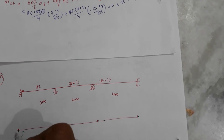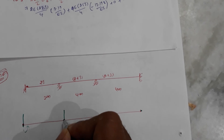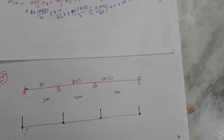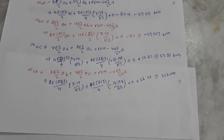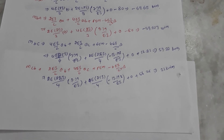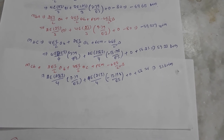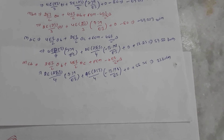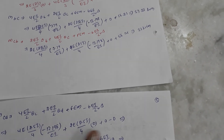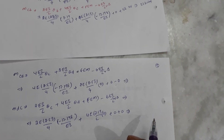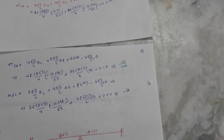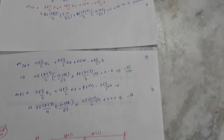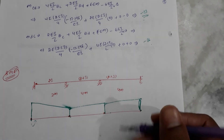The negative sign indicates an anti-clockwise rotation convention. The values are minus 69, 59, 33, minus 33, and minus 16. Since the loading is purely due to settlement with no external loads applied, this completes the bending moment diagram for the beam.